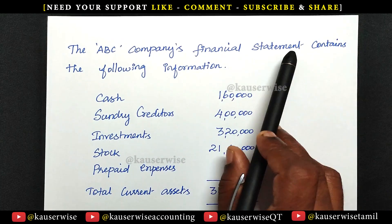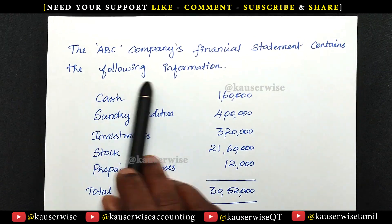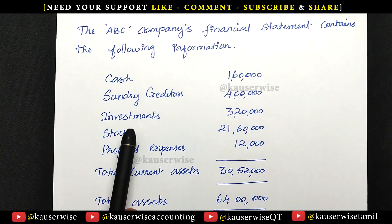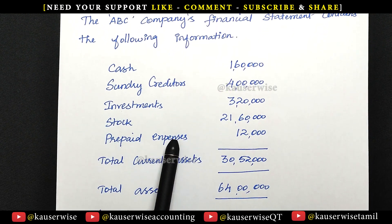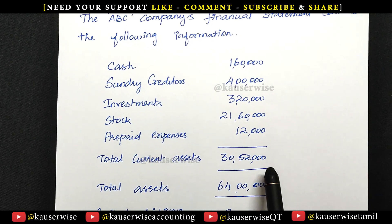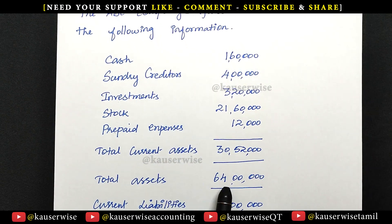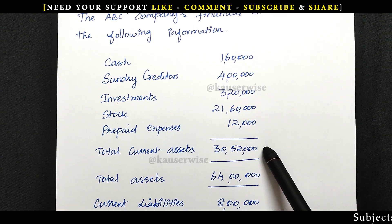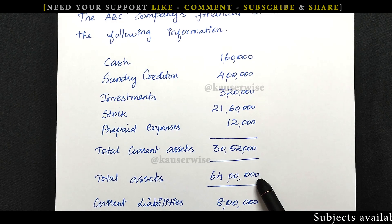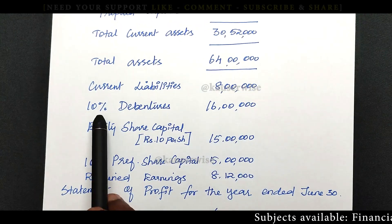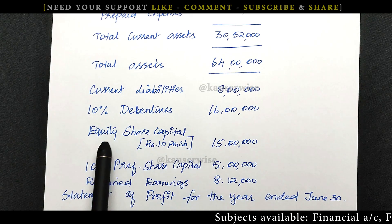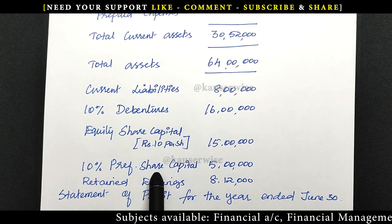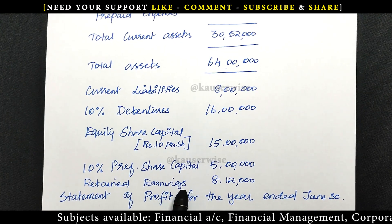ABC Company's financial statement contains the following information: cash, sundry creditors, investment, stock, prepaid expenses — so total current assets and then total asset. Total asset consists of total current asset plus total fixed asset equals total asset. And then current liabilities, 10% debentures, equity share capital rupees 10 per share, 10% preference share capital, and retained earnings.